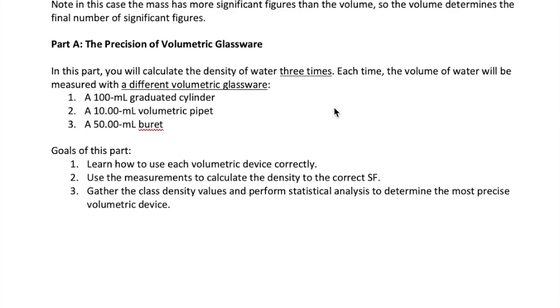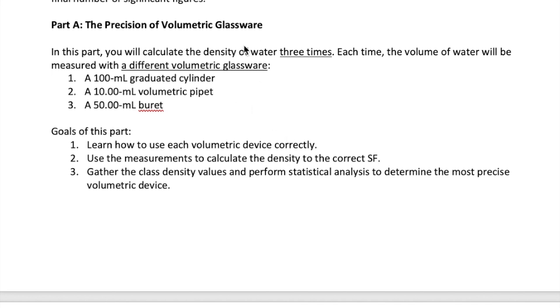Now let's talk about the actual experiment in part A. What you're doing is calculating the density of deionized water by measuring the mass and volume of a sample of water. The mass will be calculated by taking the difference between the mass of an empty beaker with the mass of the beaker filled with the water sample. The volume, though, are going to be measured with different glassware in each of the three experiments. The glassware is going to be a 100 milliliter graduated cylinder, a 10 milliliter volumetric pipette, and a 50 milliliter burette. So we will repeat the experiment three times, each time using a new glassware to measure the volume of the sample.